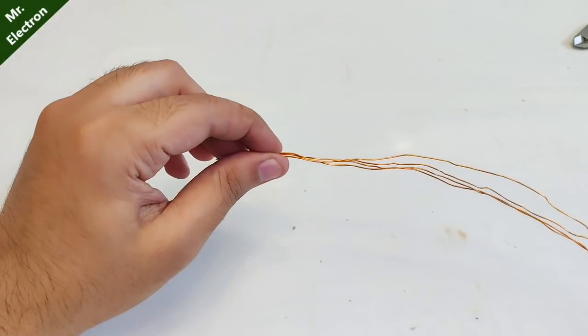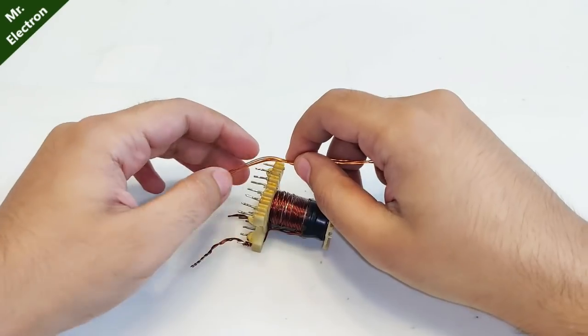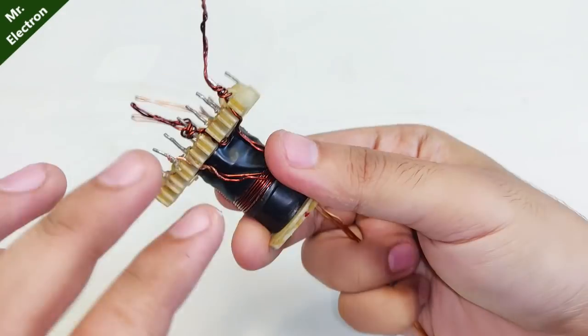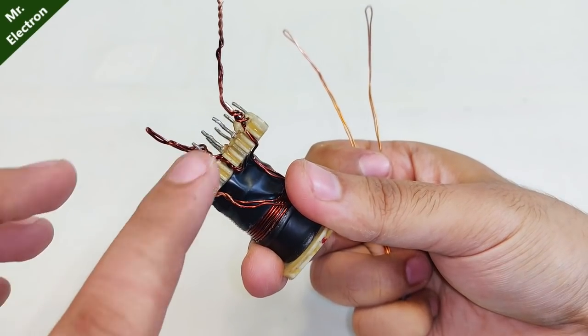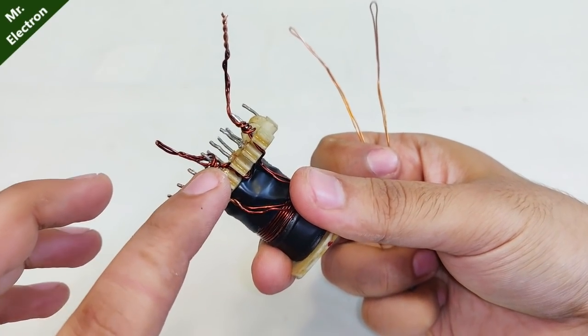I'm going to wound the wire on the other side this time. This side is for the primary low current high voltage, and this side is for secondary low voltage high current.